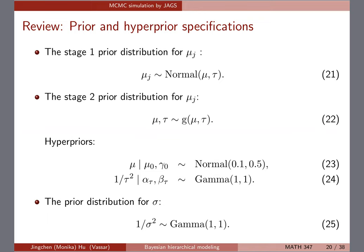For the two gamma distributions we have for the precision, I'm giving a very non-informative prior here — just gamma(1,1) — and let the data decide. A lot of times if you don't know much about it, especially for precision, just give gamma(1,1); that usually will be fine.